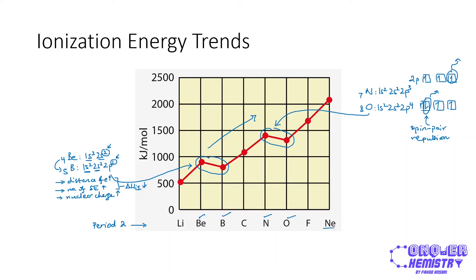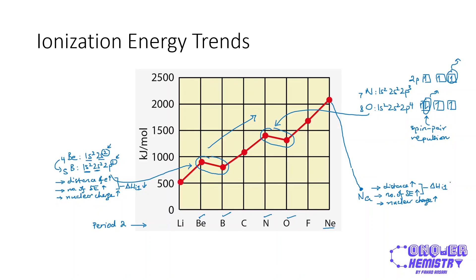Moving from neon, the last element in period two, to sodium, the first in period three, there is a sharp decrease in first ionization energy. Sodium has three principal quantum shells, so the electron to be removed is in the third principal quantum shell — its distance from the nucleus has increased and the number of shielding electrons has increased dramatically. The nuclear charge also increases, but distance and shielding vote for a decrease and, as in a democracy, they win.